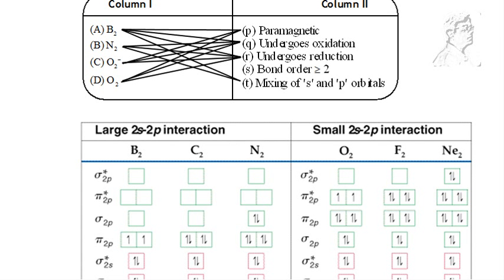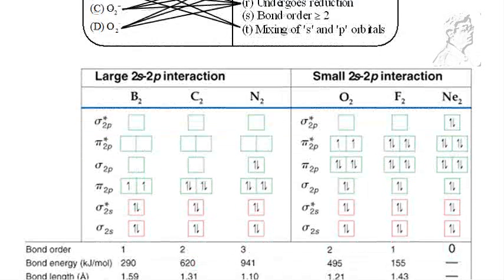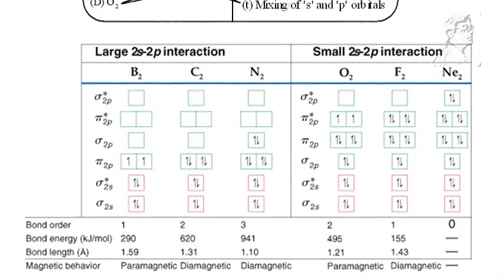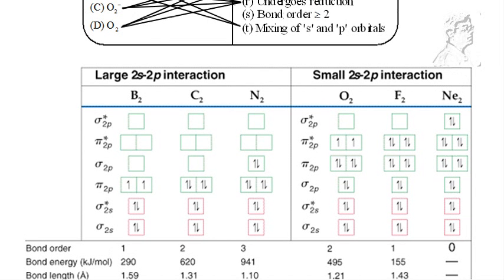Let's look at the bond order now. For boron, it is 1.